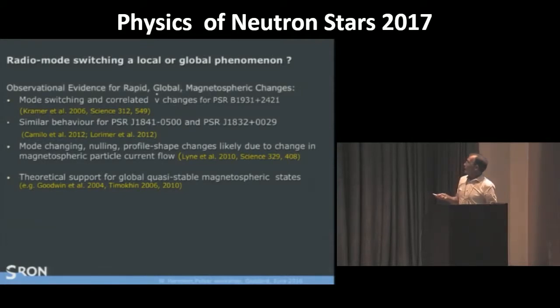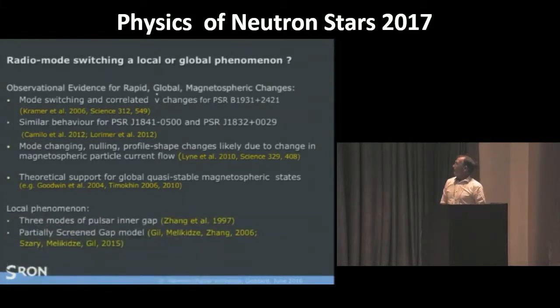At the same time, there was theoretical support that the magnetosphere has global quasi-stable magnetospheric states. At the same time, there are papers that explain the mode switching of the radio as a local phenomena by discussing the inner acceleration gap with partially screened cap models.